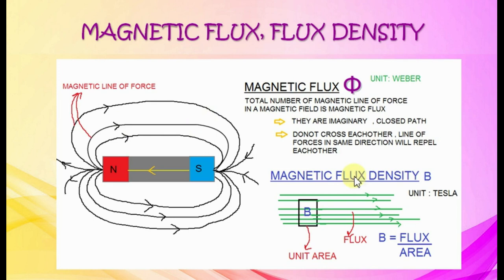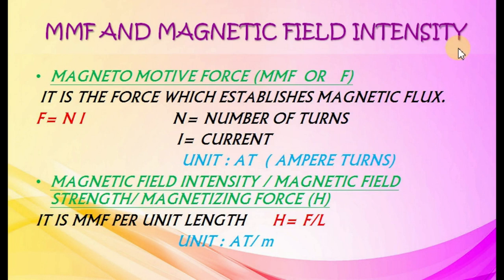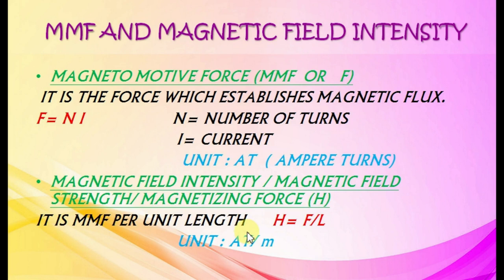MMF and magnetic field intensity. Magnetomotive force MMF or F is the force which establishes magnetic flux. F equals NI, where N equals number of turns and I equals current. Unit is ampere-turns. Magnetic field intensity H is MMF per unit length. H equals F by L. Unit is ampere-turns per meter.